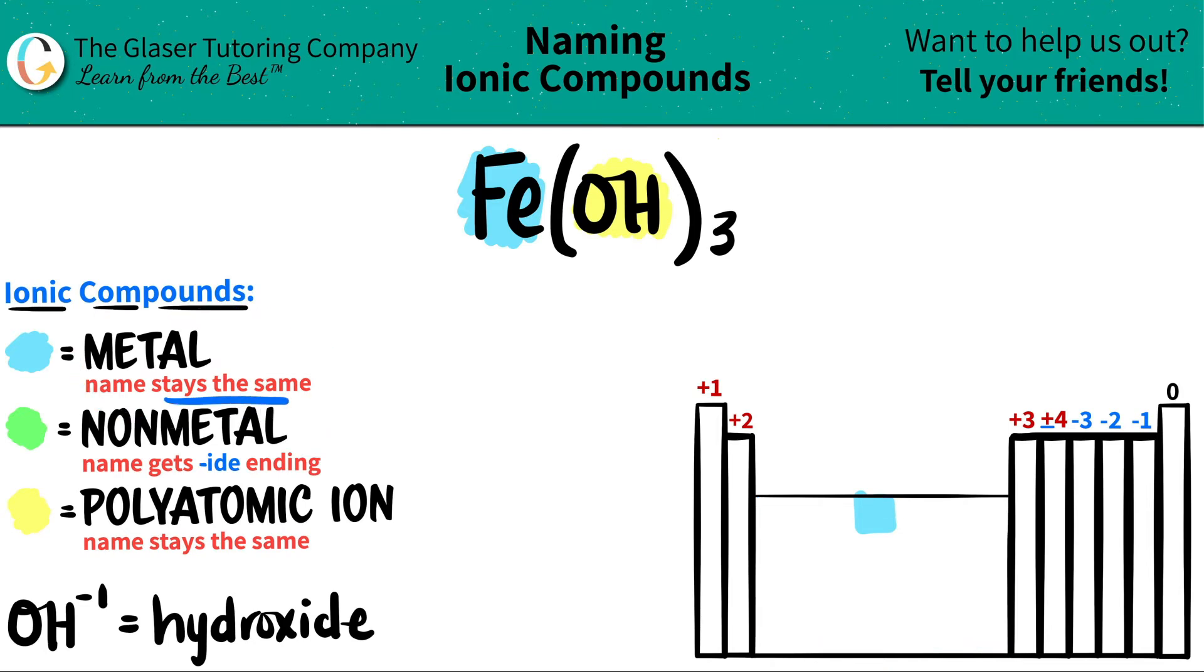The metal name always stays exactly the same. So since this was iron on the periodic table it stays iron. And since this is a polyatomic, polyatomic names stay the same but it's just harder because you have to memorize them. OH is always hydroxide, so I'll say hydroxide.